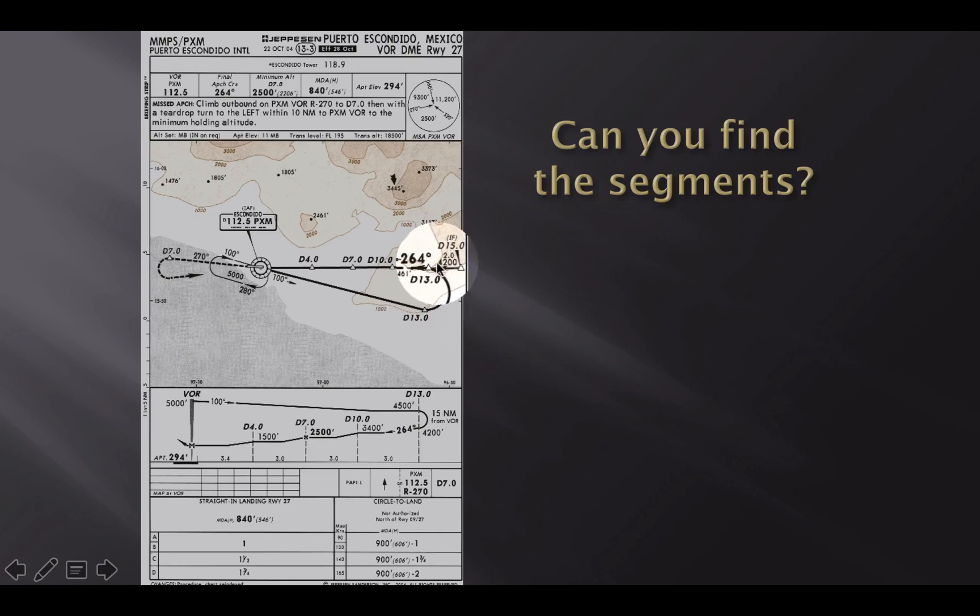Swinging around this way in the turn and coming inbound is the intermediate segment. Because that leads us to the final segment. And it looks like as we're inbound on the 264, we can drop it to 3,400 feet. After DME 10, we can drop it down to 2,500 feet. That's a step down altitude.